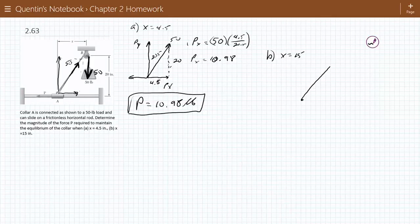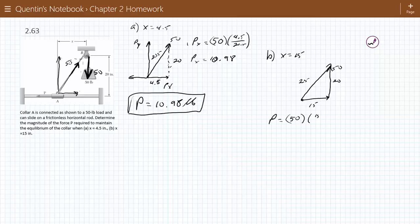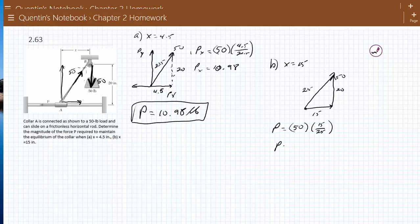We have, still, we have 50 in this direction. The distance here is 15. The distance here is 20. That works out to be 25 over here. So therefore, P is equal to 50 pounds times 15 over 25. So P is equal to 30 pounds.